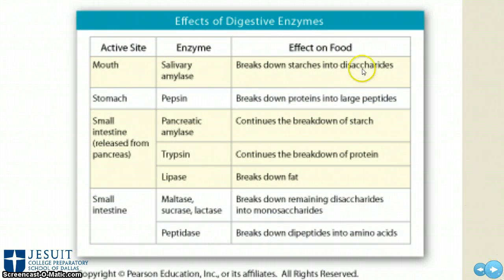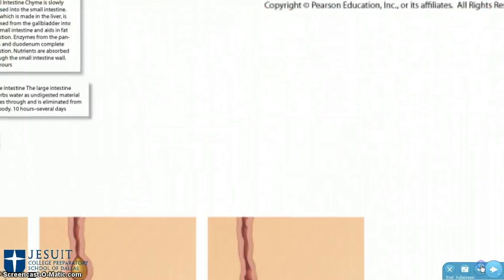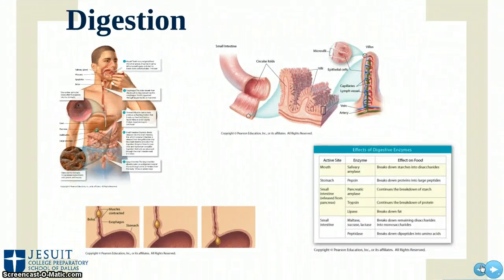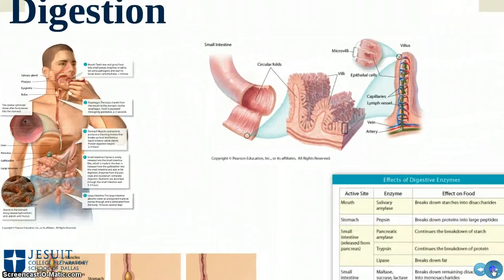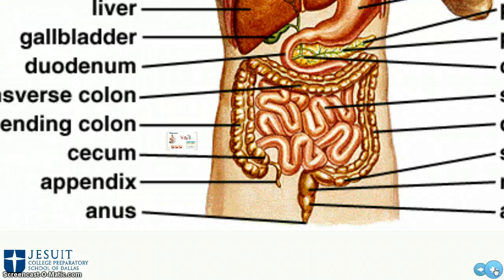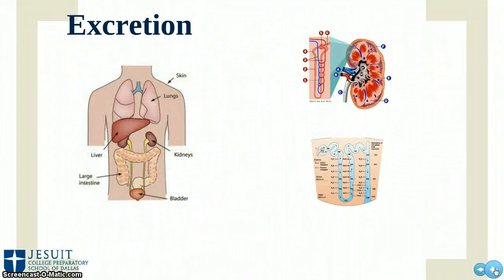There's a table that would be good to memorize in conjunction with the diagram of the digestive tract. What I want you to know is the enzymes that occur at each step and what they break down. Make sure you review that. And that takes us all the way to excretion.